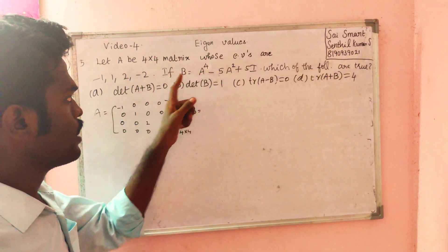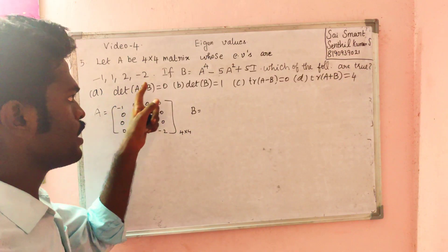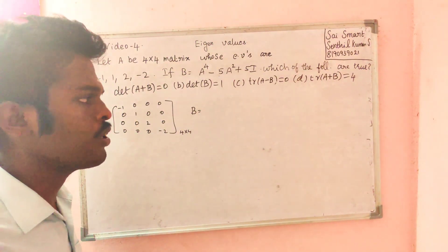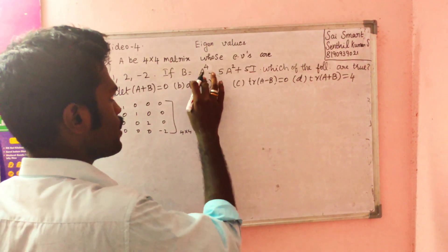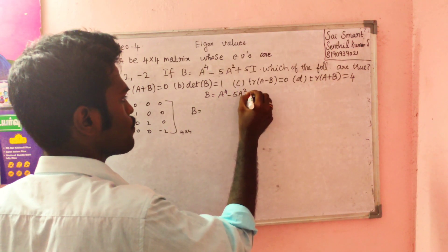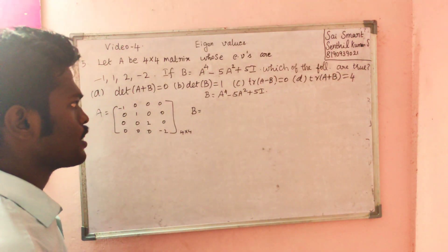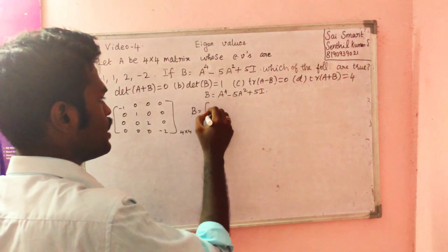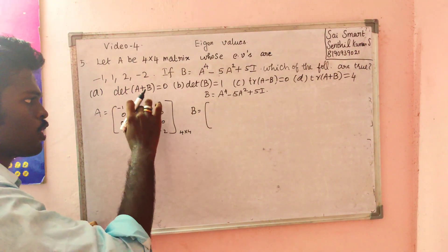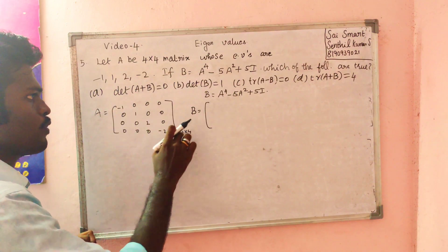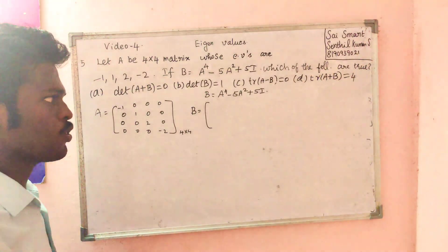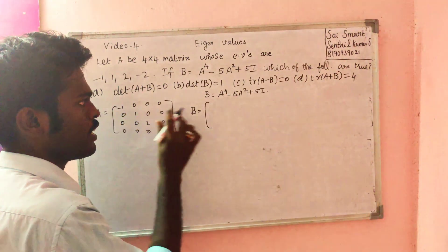If A to the power 4 minus A — B is the second thing. Determinant of A plus B, determinant of B, trace of A minus B, trace of A plus B — these are the things to find. B equals A to the power 4 minus A squared plus 5I. Leading diagonal elements — matrix multiplication. Everything is done.